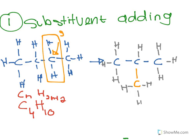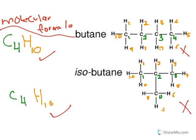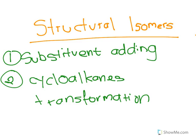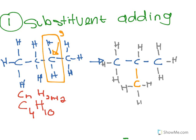This is the substituent adding method — and if you remember, the result is the same as what I showed before: this is butane, and this right here is isobutane.